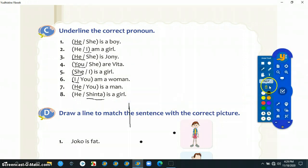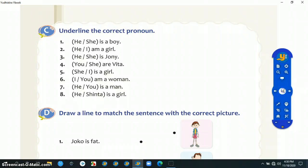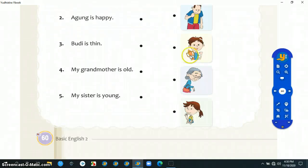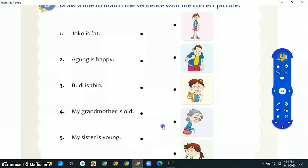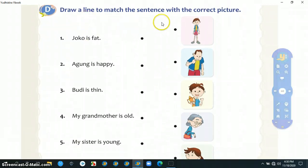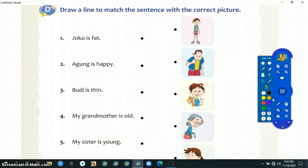Sekarang kita lanjutkan di halaman selanjutnya. Draw line to match the sentence with the correct picture. Kalau ada perintah seperti itu, berarti kita disuruh tarik garis. Joko is fat, Agung is happy, Budi is thin - thin itu kurus, happy itu bahagia, fat itu gemuk. My grandmother is old, my sister is young. Berarti kita tarik garis.